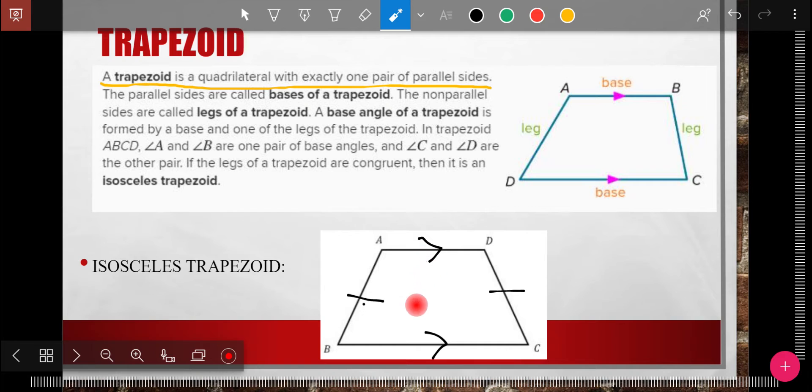So again, you have a trapezoid, so one set of parallel sides. And these are the bases. And then the legs in the isosceles are congruent.